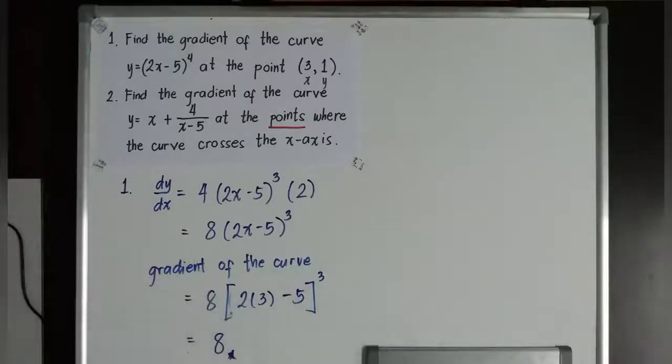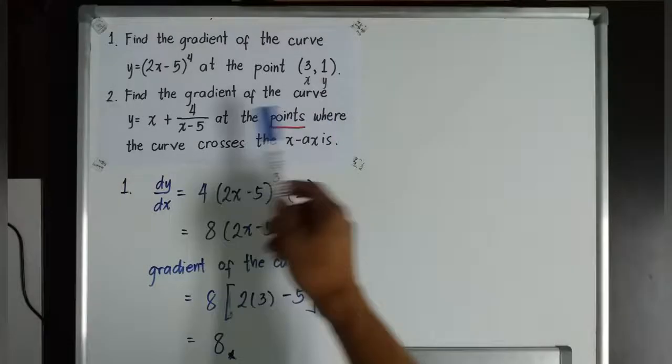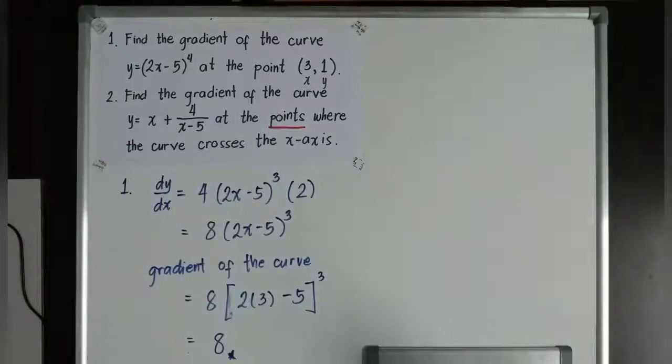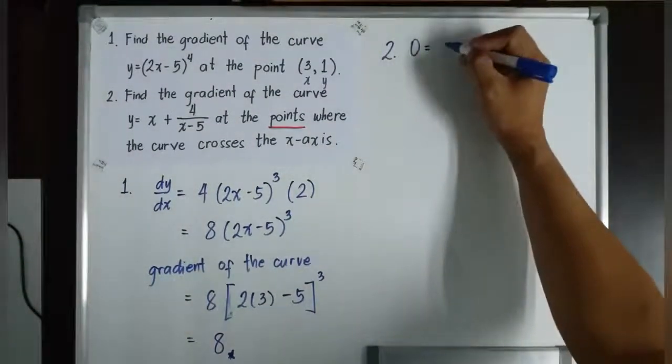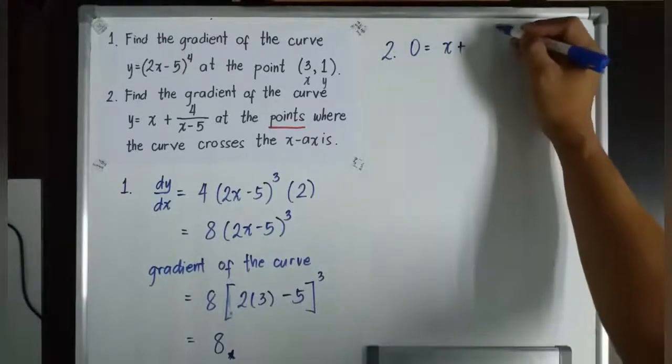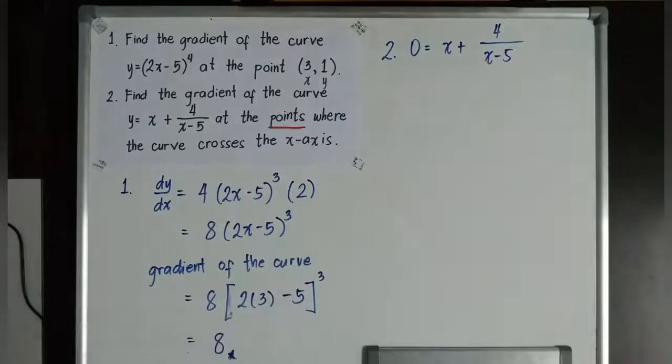Next. So, how do we get into solving this problem? Basically, when we say where the curve crosses the x axis means these are x-intercepts. And by definition, x-intercepts are always defined by the point 0x, the value of the x, comma 0. So, it means the value of the y is always 0. So, in number 2, to solve this, we make y 0 equals now to x plus 4 over x minus 5.